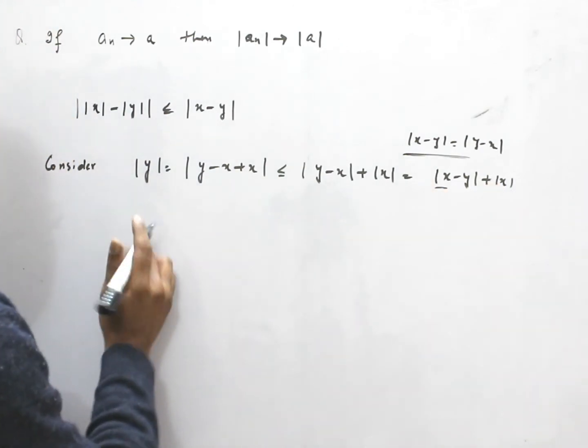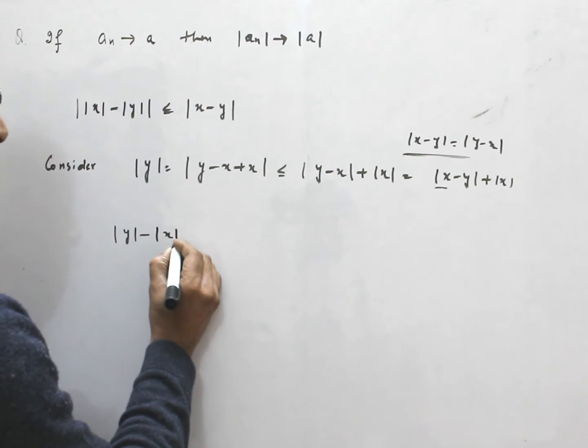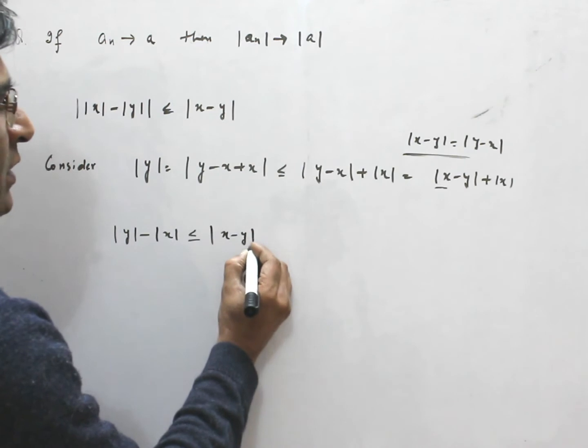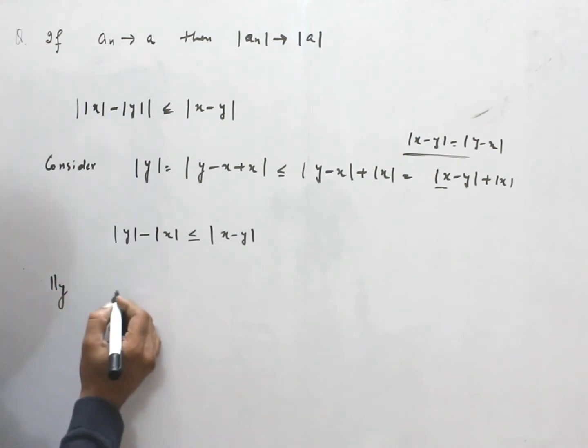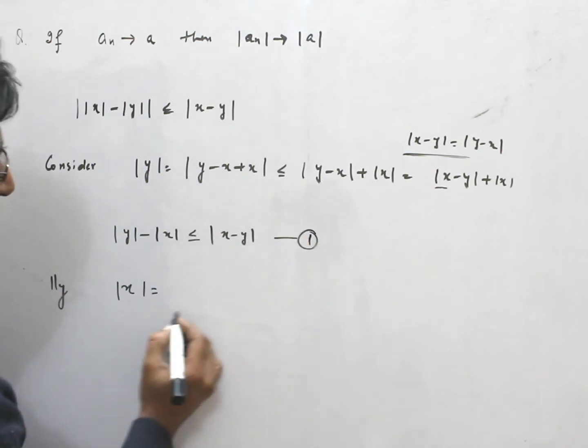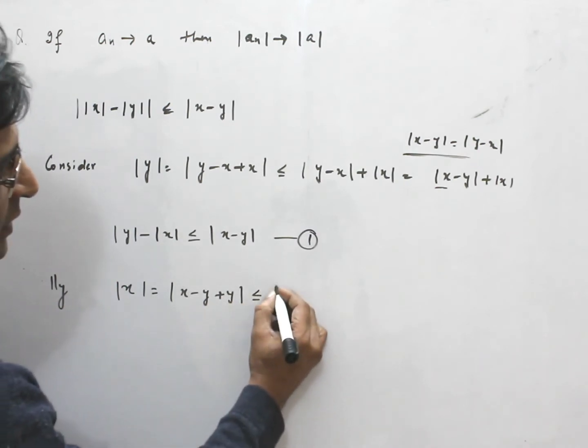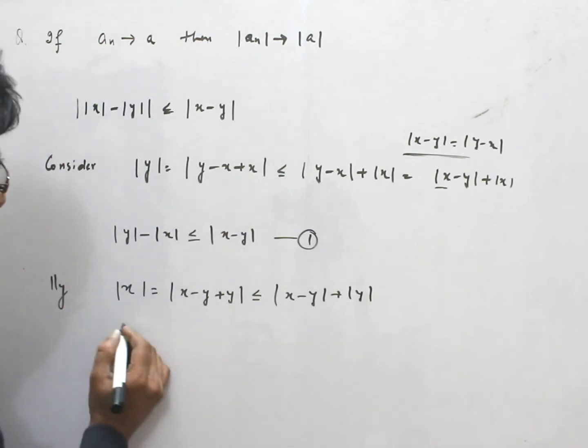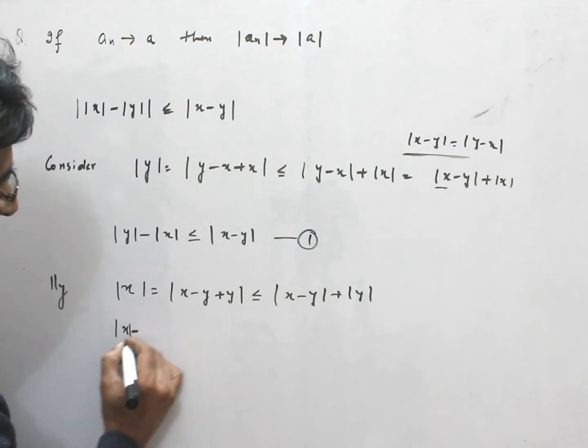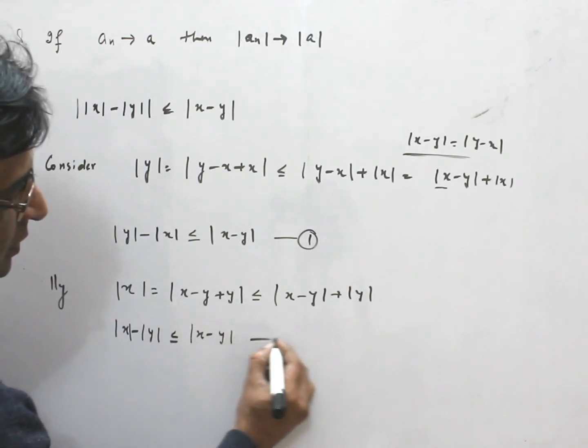Therefore, if I take this on left side, we have norm of y minus x less than or equal to x minus y. Similarly, again, if I consider x, I can write x minus y plus y. And by triangle inequality, x minus y plus y. Taking y this side, I have mod of x minus mod of y less than or equal to x minus y. This is 2.